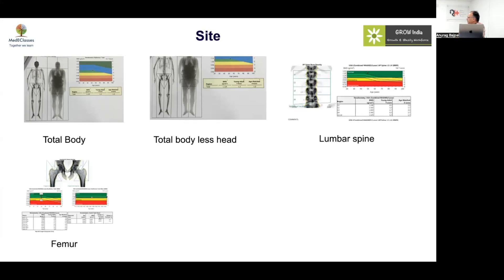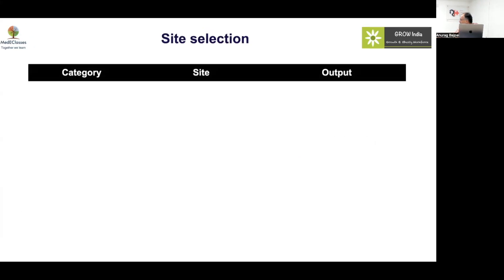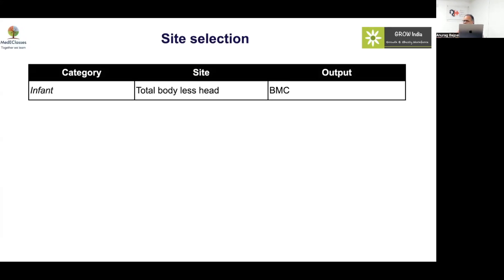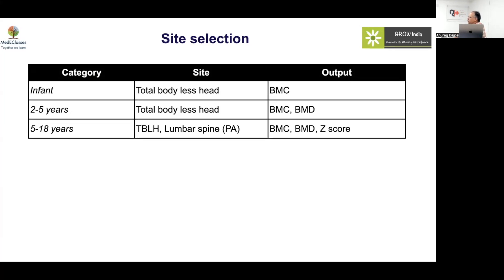You can also look at lumbar spine, proximal femur, or forearm. Typically when ordering, we request TBLH along with femur, lumbar spine, and forearm. For infants, we use total body less head and bone mineral content (BMC). For ages two to five years we use BMC and BMD (density = mass/area), noting that this is an aerial BMD in g/cm², not a true volumetric BMD.